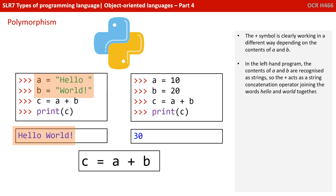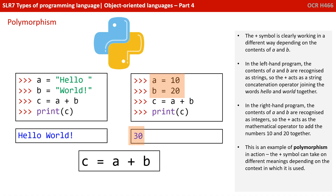In the left-hand program, the contents of A and B are recognised as strings, so the plus acts as a string concatenation operator, joining the words 'hello' and 'world' together. In the right-hand program, the contents of A and B are recognised as integers, so the plus acts as a mathematical operator to add the numbers 10 and 20 together. This is an example of polymorphism in action — the plus symbol can take on different meanings depending on the context in which it is used.